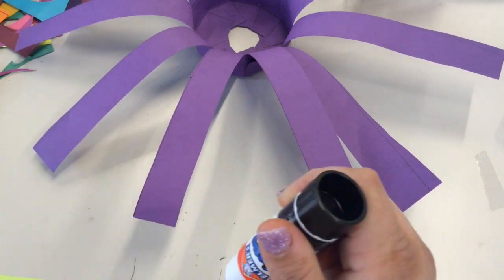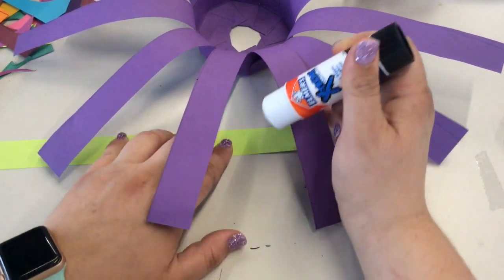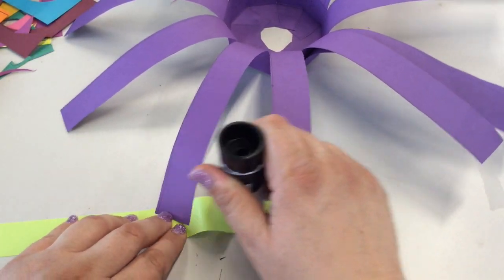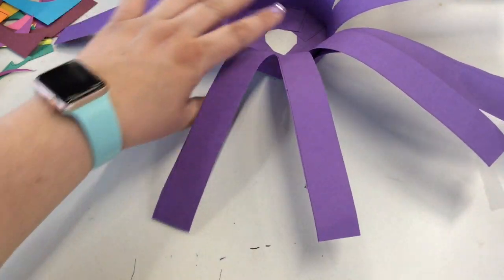With your extra strip of colored paper on about the last inch or so, get a nice big glob of glue on the end.